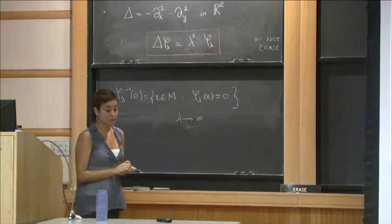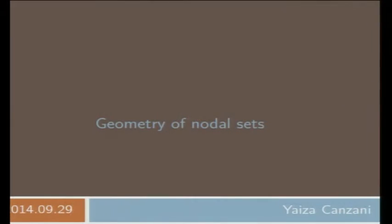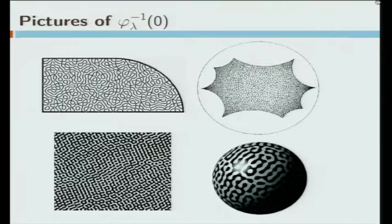In my first slide, I'm showing you some pictures of zero sets of eigenfunctions. On the top left, what you see is simply a quarter stadium, and all those lines inside of it are the zero sets of a high energy eigenfunction. Each time I say high energy, I mean lambda large. Here, you're seeing a torus on the zero set of an eigenfunction again. And at the bottom, you're seeing a square torus and a sphere.